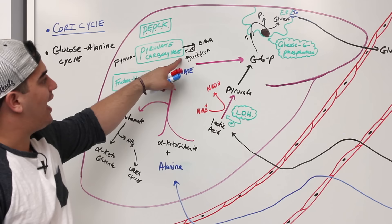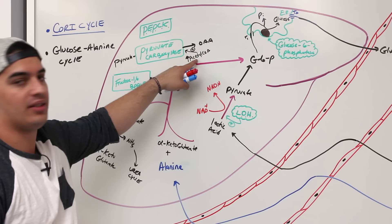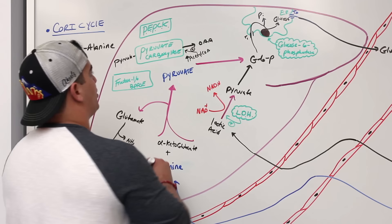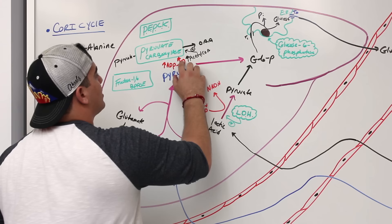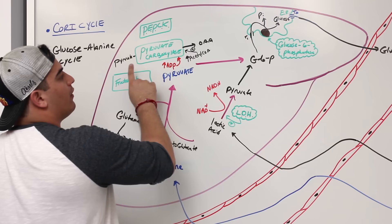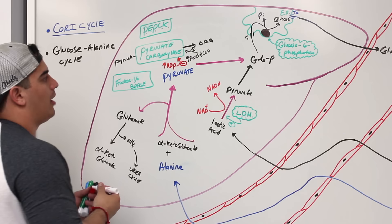Certain things can also inhibit pyruvate carboxylase. The opposite of acetyl-CoA — free CoA — could inhibit it, and high amounts of ADP signal low energy, which would also inhibit this enzyme. If there are low energy signals, you want to divert away from making glucose and instead break down glucose to make ATP, so the enzyme should be inhibited.